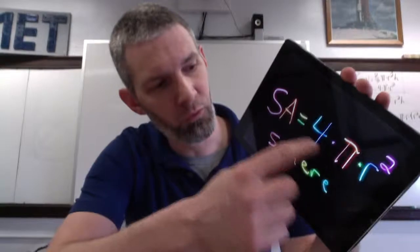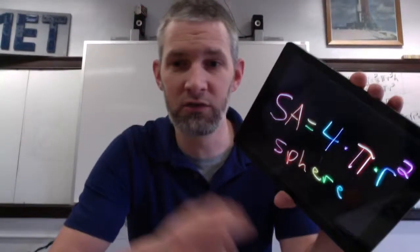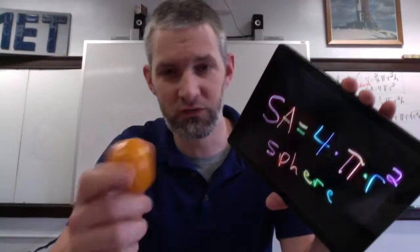But it's 4 times pi times radius squared. Now, pi times radius squared is the area of a circle. So here's a trick if you've got something you can peel.